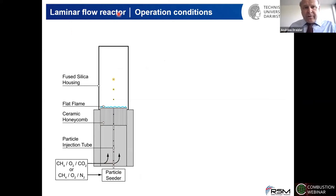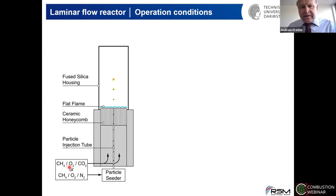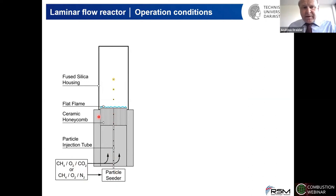We look into a laminar flow reactor where a flat flame stabilized on a ceramic honeycomb creates a hot atmosphere operated with methane. The lean oxy-fuel environment has excess oxygen for oxidizing particles injected along a tube, typically two millimeters in diameter. We have optical access from all sides via fused silica windows. We characterize boundary conditions well — wall temperature, gas temperature, gas velocity, and flame front position — and can study parametrically what happens when we inject different particles in different atmospheres.